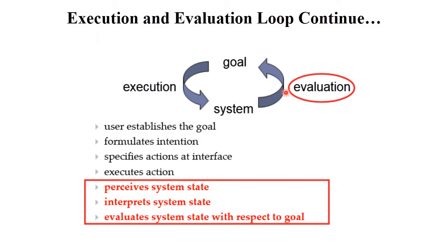The next phase is evaluation. Evaluation involves three stages: perceiving the system state, interpreting the system state, and evaluating the system state with respect to the goal. First you decide your goal, second you execute your goal using different actions, and last you evaluate how to achieve your goal. This is the structure of Donald Norman's model.